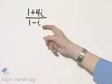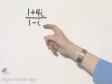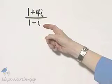We'd like to divide these two complex numbers. In other words, we'd like to write this in the form A plus BI.